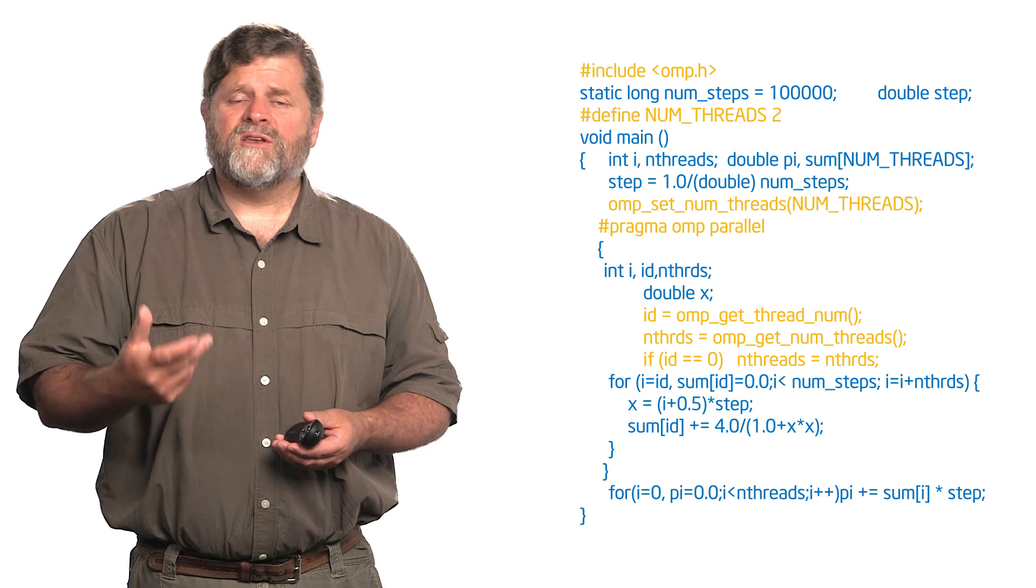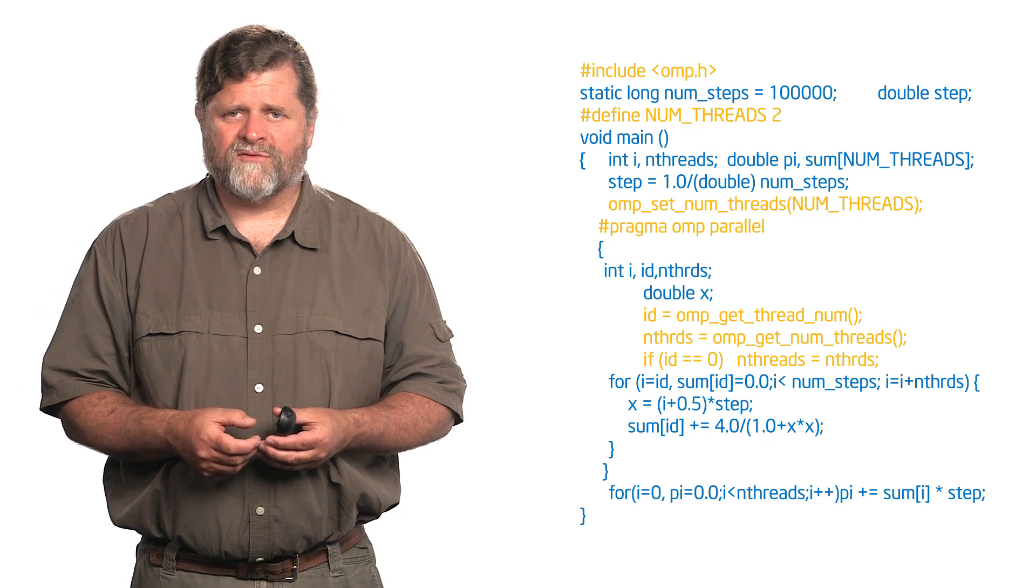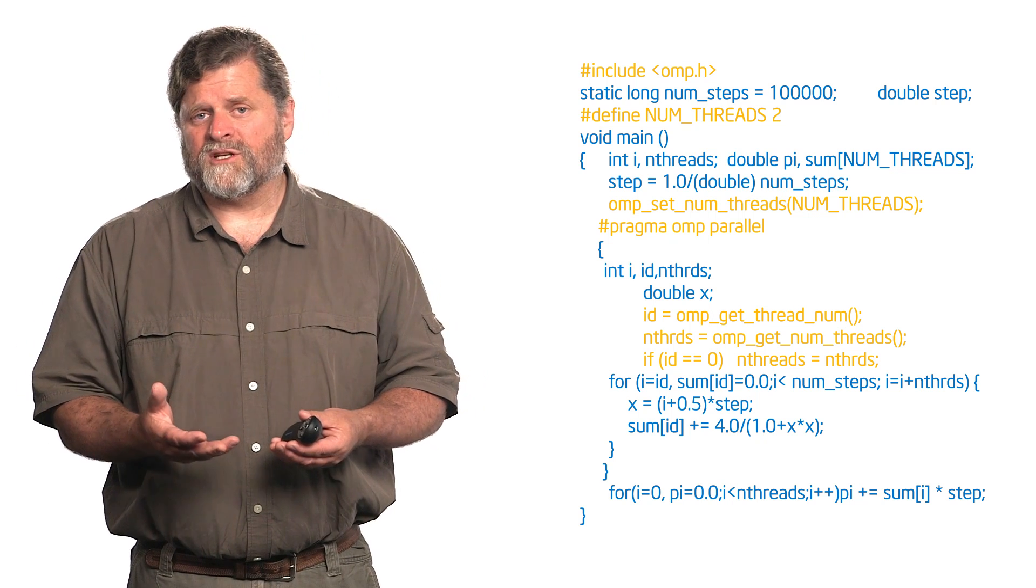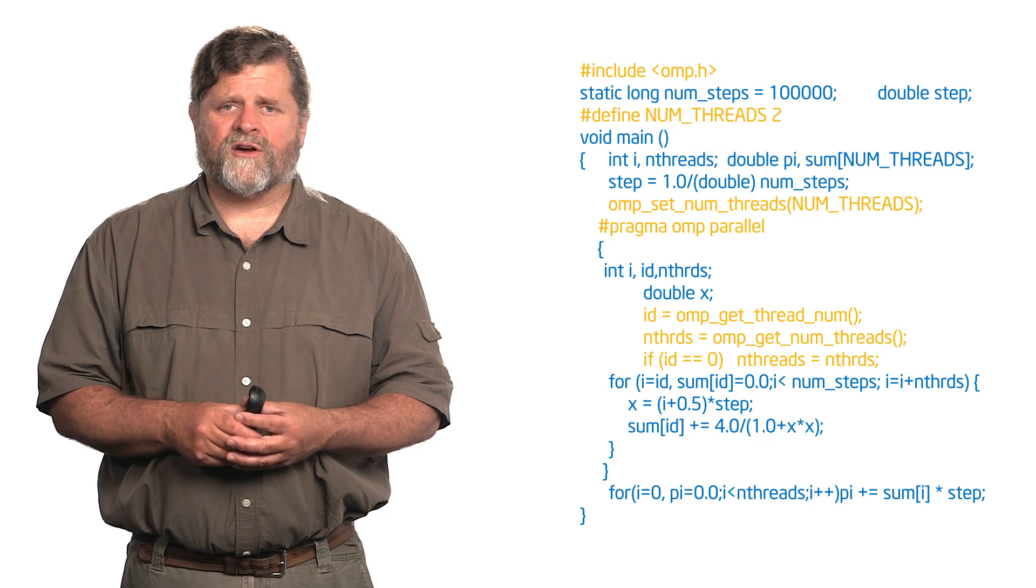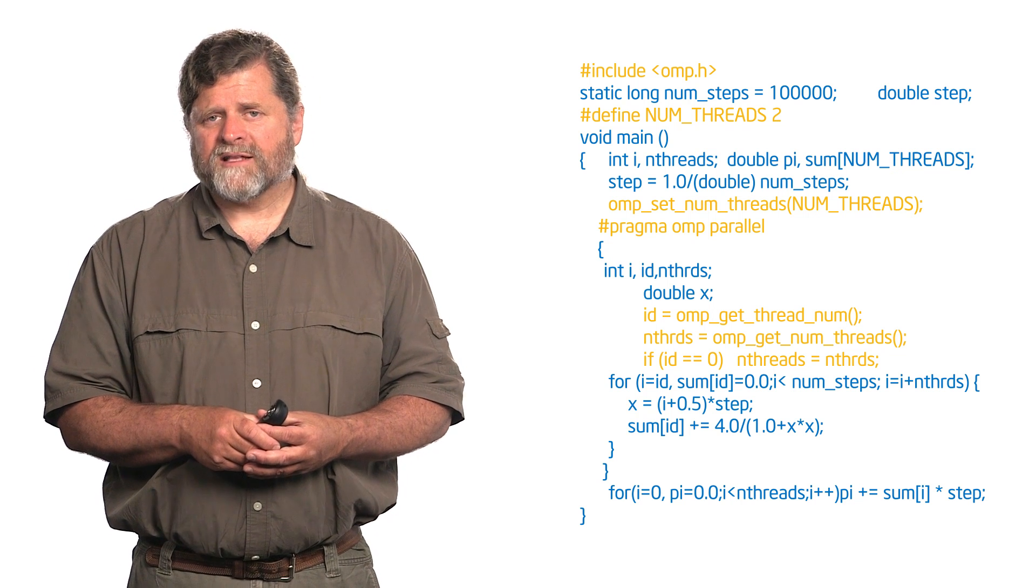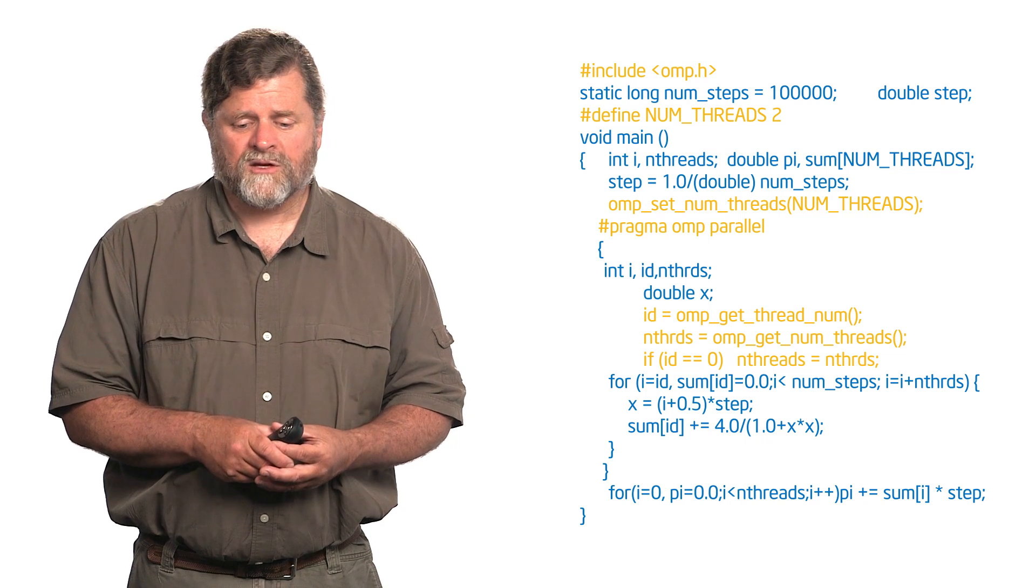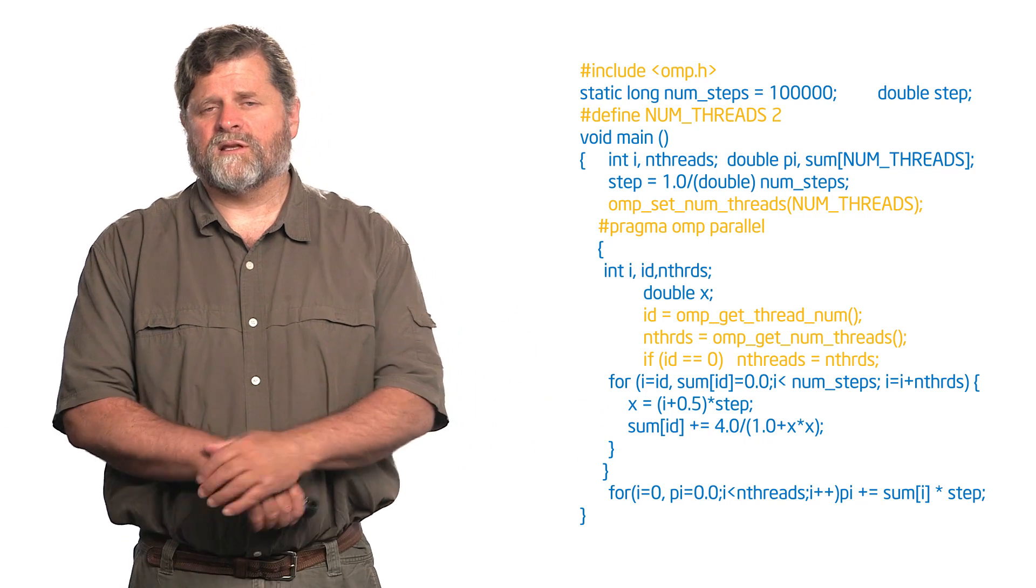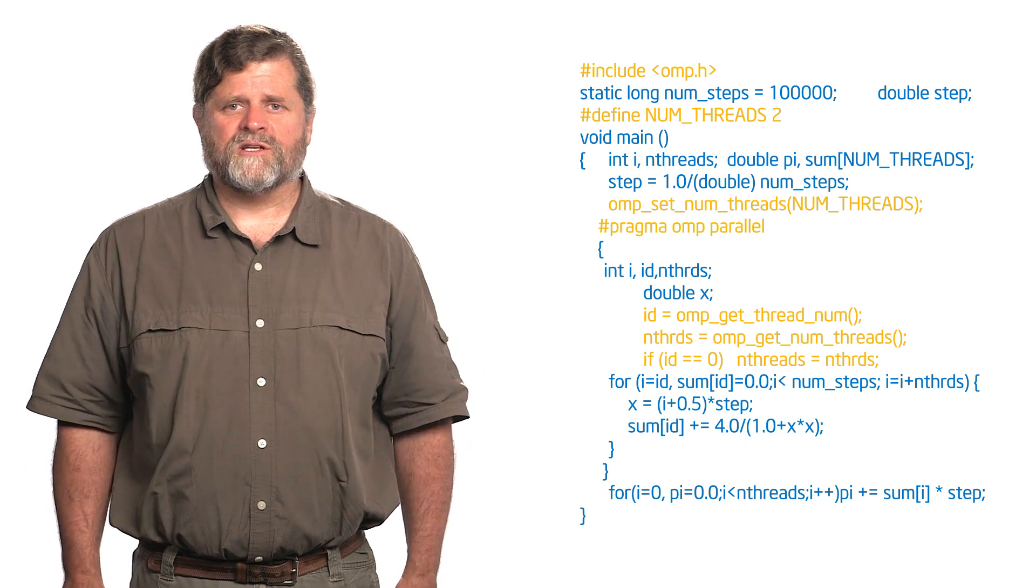So that's why I picked one thread, doesn't matter which one I picked, but I picked one of the threads to say, hey, will you copy the number of threads we have to work with inside the parallel region? Will you copy that into the shared variable? Because that way I'll know how many there were when we get out. So that's why I had that little if ID equals zero, n threads equals the number of threads inside the parallel region.